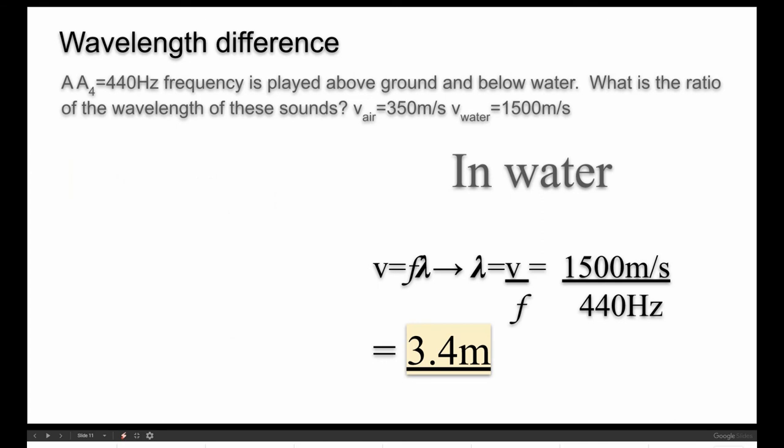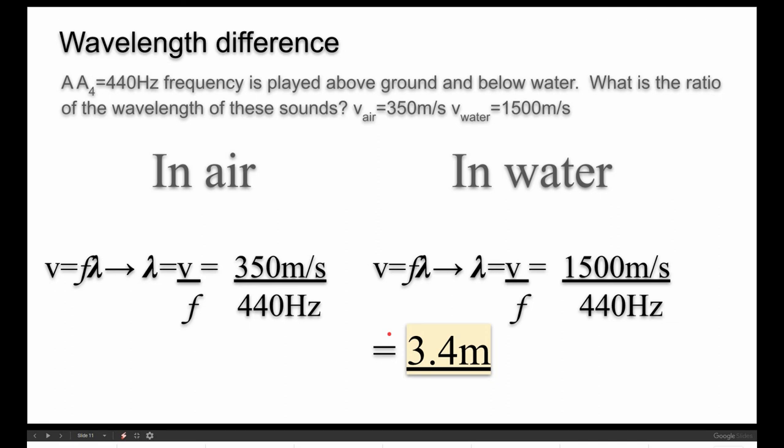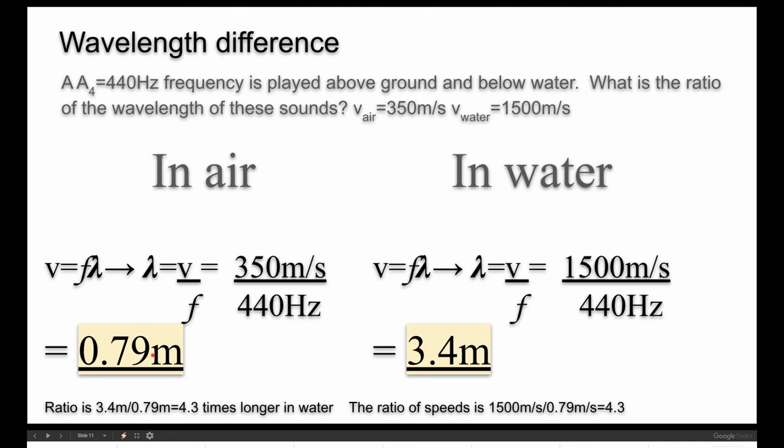Wavelength difference. A 440 hertz wave is played above ground and below water. What is the ratio of the wavelength of these sounds? Well, we already did one in water earlier, and there's only a slight change here. And we got about three and a half meters. In air, at a much slower speed, we get 0.79 meters. By asking what is the ratio of the wavelength in these sounds, a lot of students will just like hang up and go, I don't know what I'm doing. I don't know how to do it. Well, in order to get a ratio of two numbers, you have to compute the two numbers. So the final question is what's the ratio?